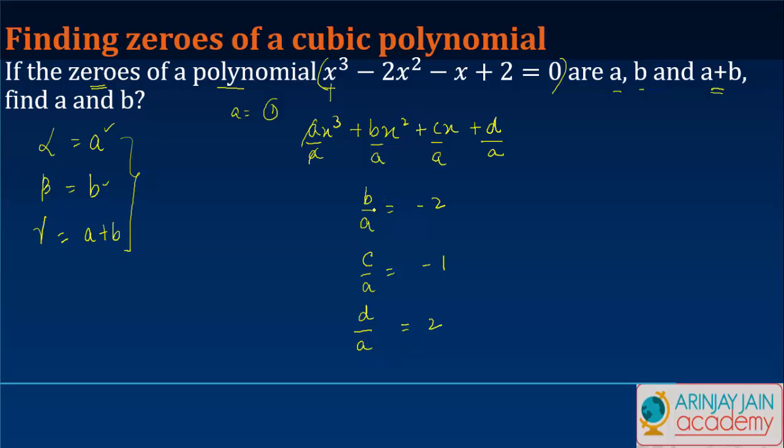What we know is that -b/a equals the sum of alpha + beta + gamma. If b/a is -2, then this equals 2. What is alpha + beta + gamma? In this case it's a + b + (a+b) = 2.